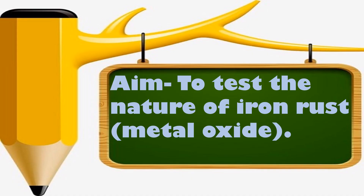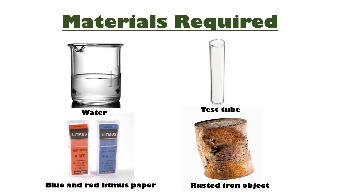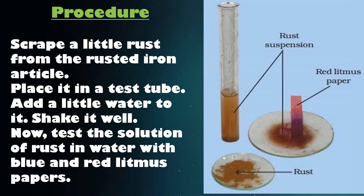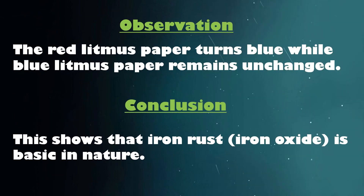Let us perform an activity to verify this. The aim of the activity is to test the nature of iron rust. You will require a rusted iron article, a test tube, water, and blue and red litmus papers. Scrape a little rust from the rusted iron article, place it in a test tube, add a little water to it, and shake it well. Test the solution with blue and red litmus papers. You will observe that the red litmus paper turns blue while the blue litmus paper remains unchanged. So we can conclude that iron rust is basic in nature.